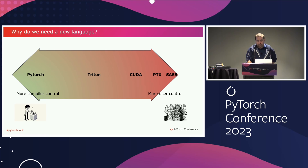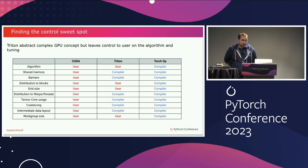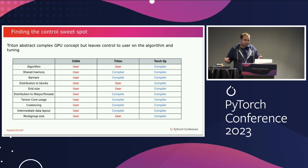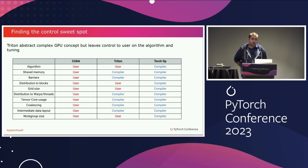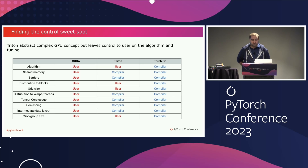The hard part of the design is finding this sweet spot, and the way Triton was designed is really about finding the right abstraction — what do you want to expose to users and what do you want the compiler to do. Compilers are productivity tools, and the goal of Triton is to have the compiler do the work you don't want to do, while still leaving you control over things like algorithms and any tuning knobs.